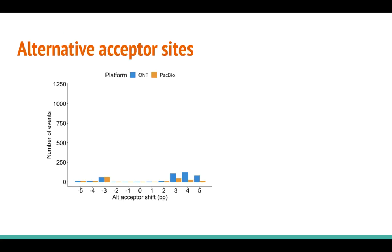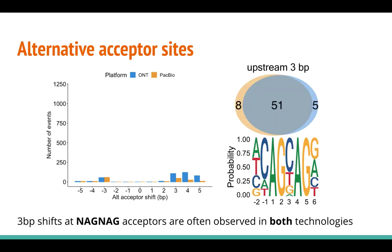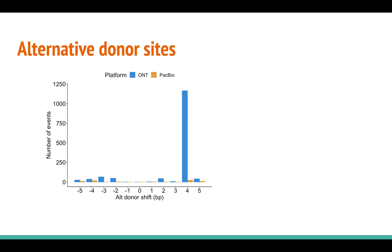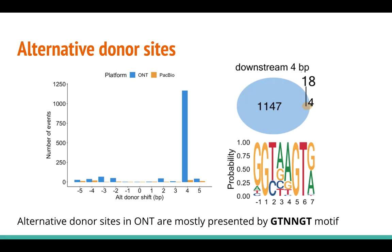On this slide we have a histogram of distances between alternative and annotated acceptor sites. Interestingly, most upstream 3 base pair shifts were supported by both PacBio and ONT. At the same time, downstream ONT acceptor shifts are not supported by PacBio reads. For inconsistent donors, a downstream shift of four base pairs mostly occurs for ONT data.